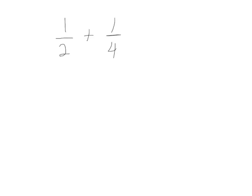This is lesson three: add fractions with unlike units using the strategy of creating equivalent fractions. In order to add fractions they have to have like units — in other words they have to have the same denominator.